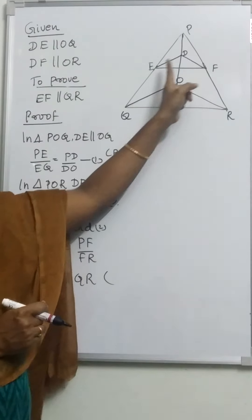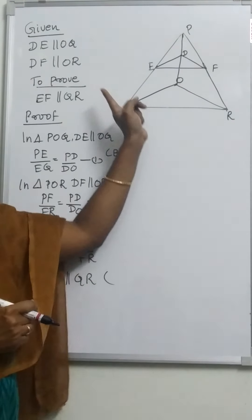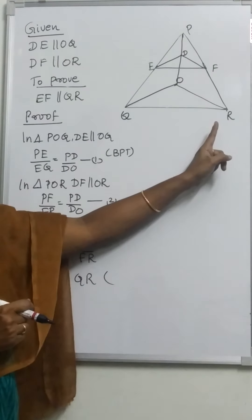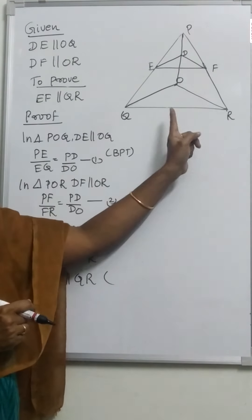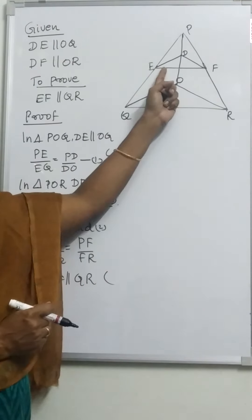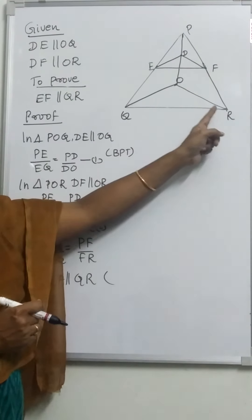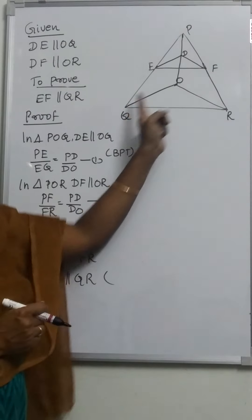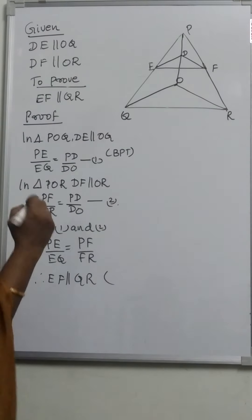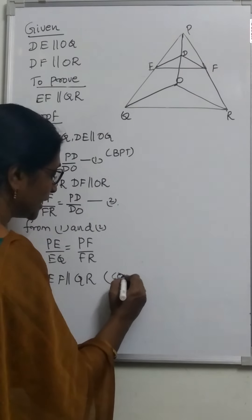A line that divides two sides of a triangle in the same ratio is parallel to the third side. That is the Converse of the Basic Proportionality Theorem. Therefore, PE by EQ is equal to PF by FR, and hence EF is parallel to QR by the Converse of the Basic Proportionality Theorem.